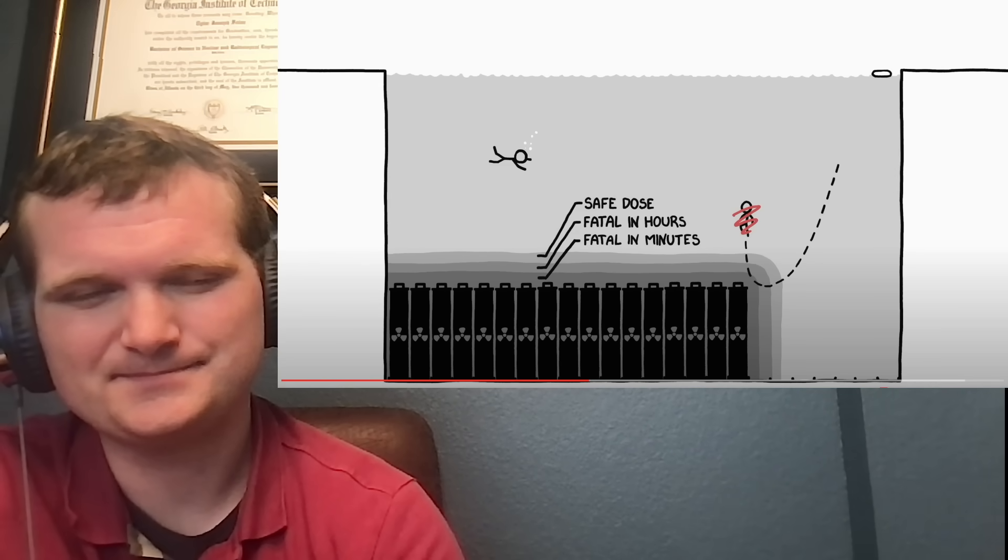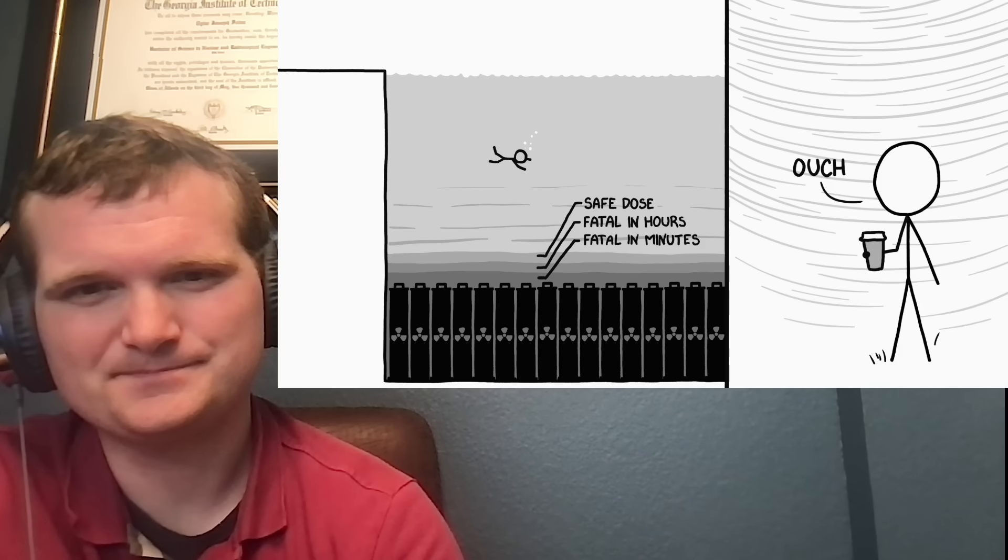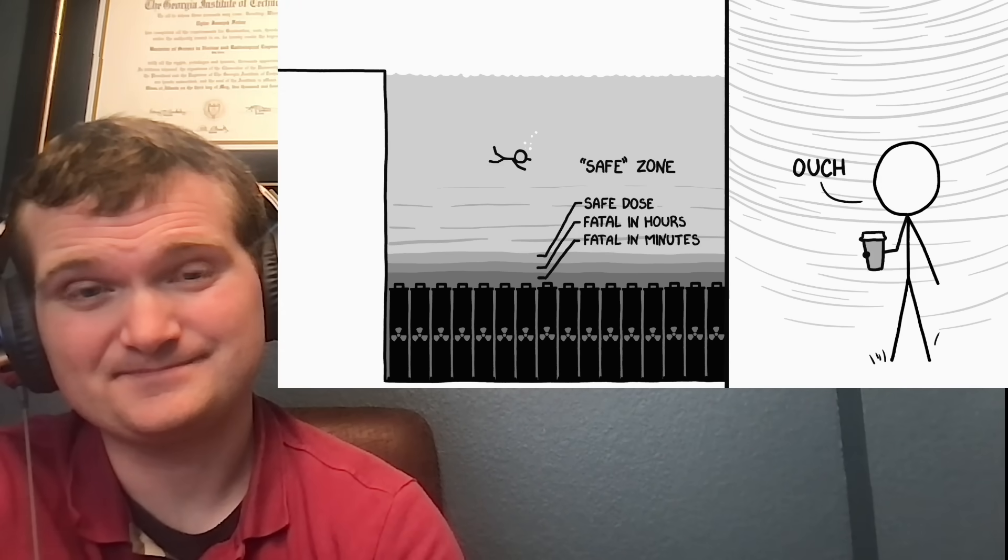Outside the safe dose boundary, you could swim around as long as you wanted. The dose from the rods would be less than the normal background dose of radiation you get from cosmic rays and stuff walking around. In fact, as long as you were underwater, you'd be shielded from most of that normal background dose as well. So you might receive a lower dose of radiation treading water in a spent fuel pool than walking around on the street.